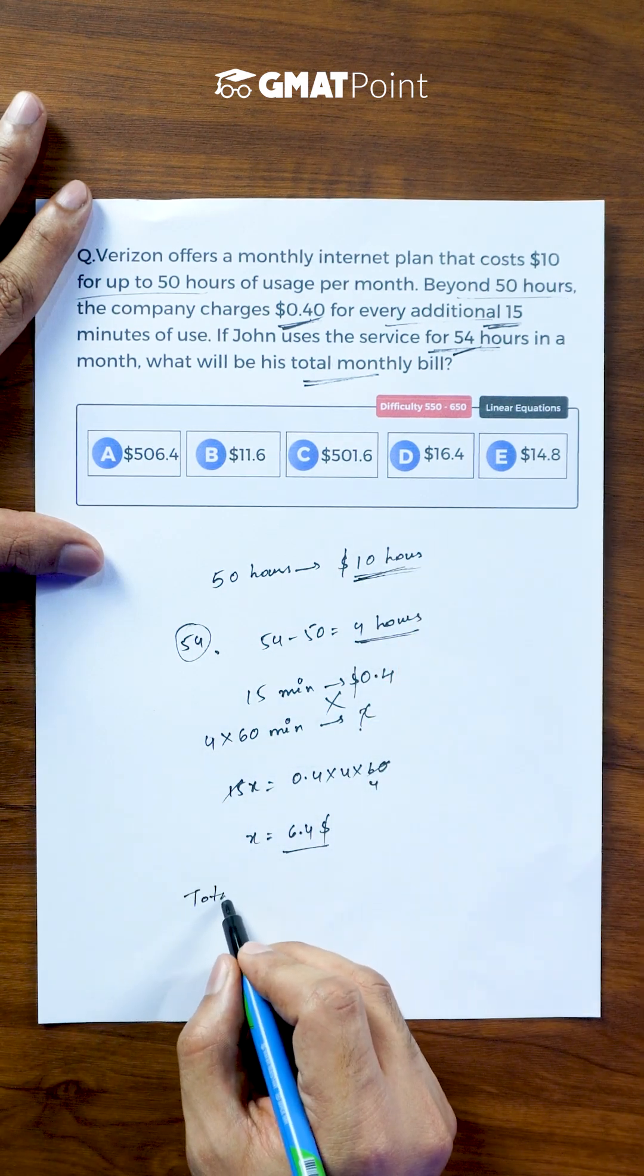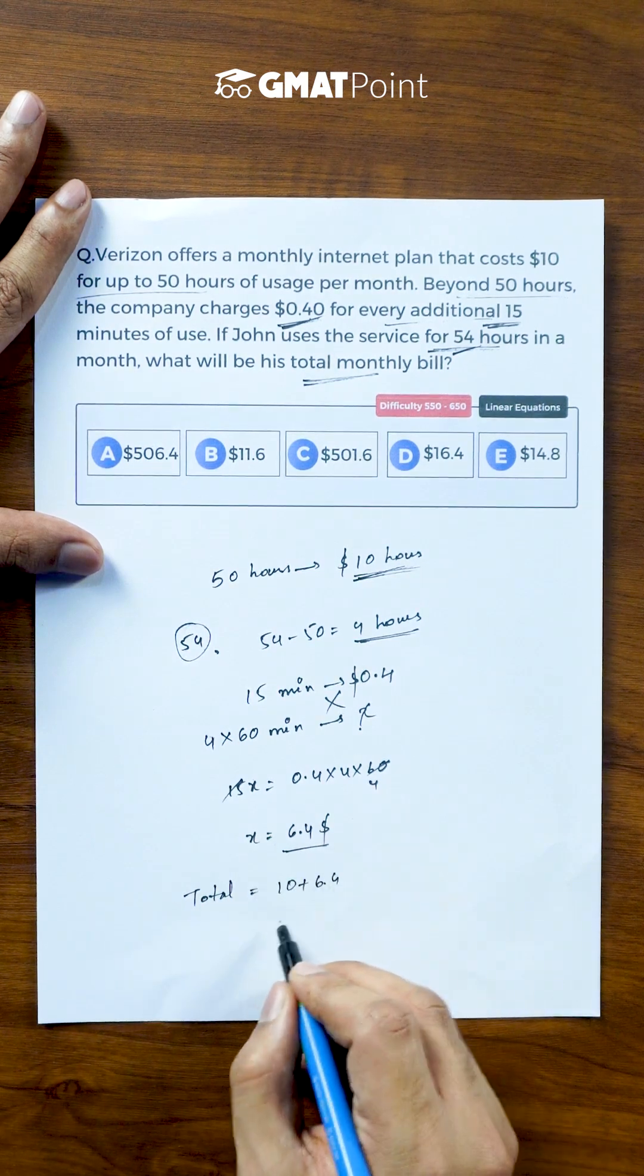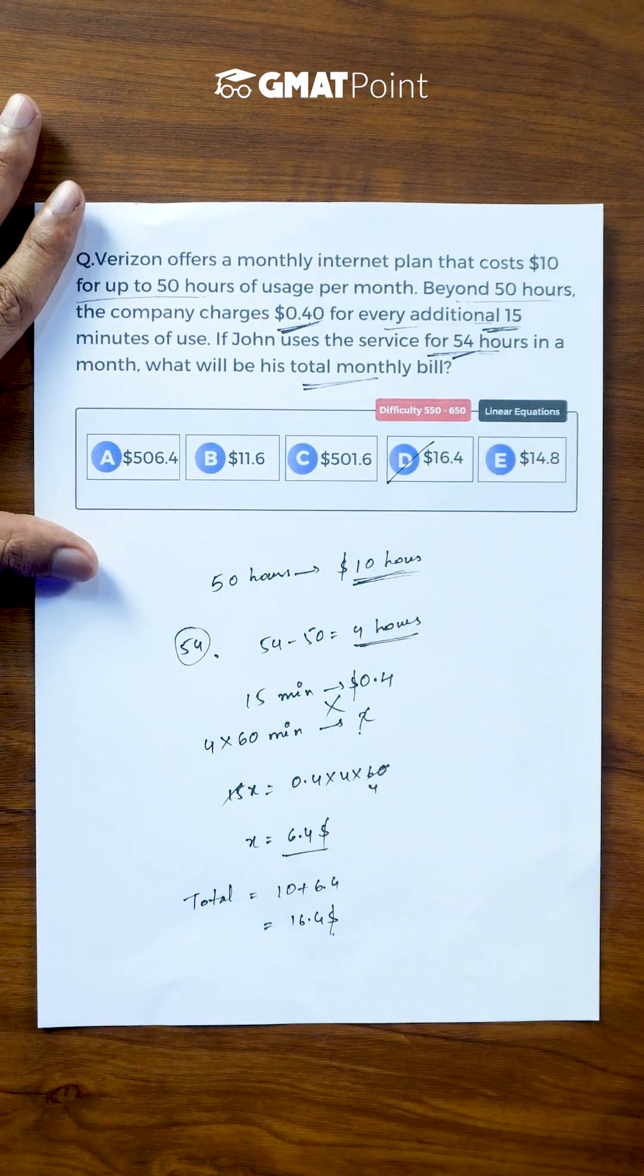So the total amount that needs to be paid can be calculated as 10 plus 6.4, which is $16.40. So the correct answer is option D.